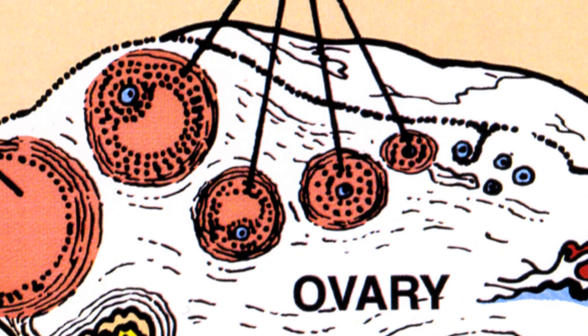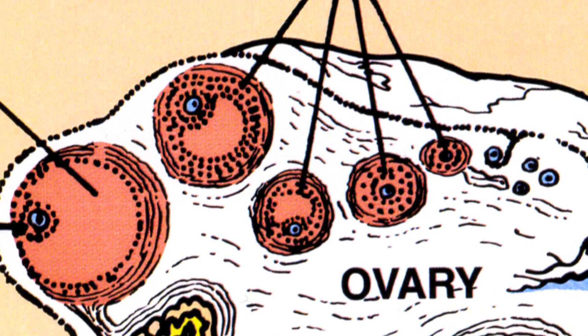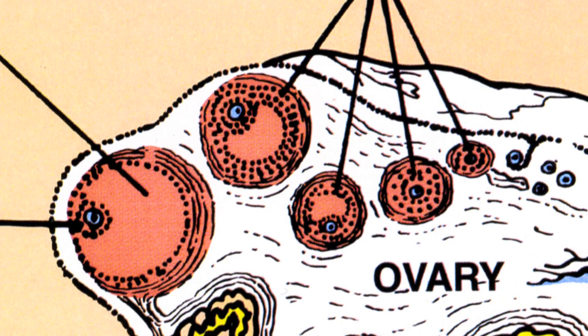Women often ask what exactly is occurring inside their body during their monthly fertility cycle. A woman's ovaries contain her eggs, the special cells of human reproduction. Hormones regulate a woman's fertility cycle, which generally spans a 28 to 30 day period. A woman's fertility cycle begins on the first day of her menstrual period.